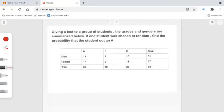Giving a test to a group of students, the grades and genders are summarized below. If one student was chosen at random, find the probability that the student got an A.